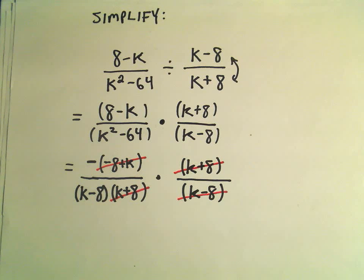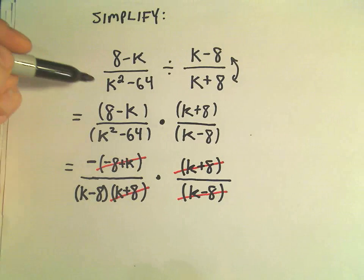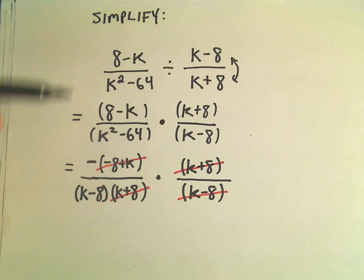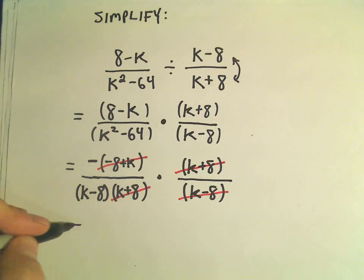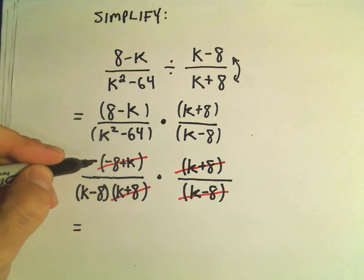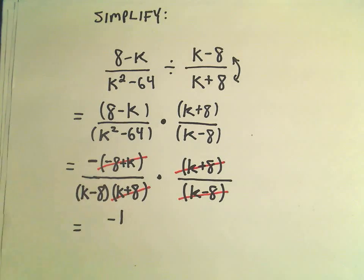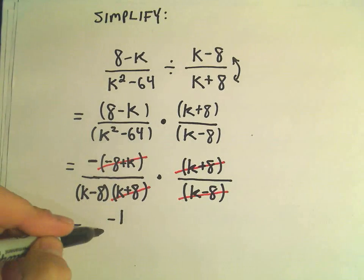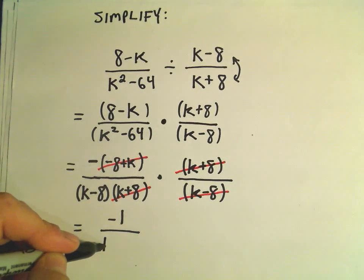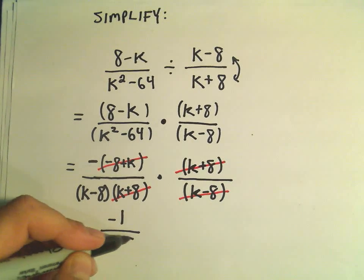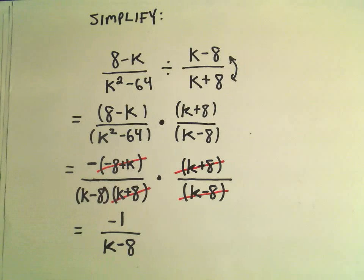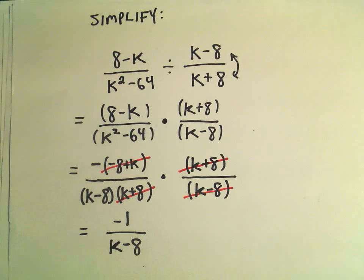We've now simplified down our original problem. In the numerator we have a negative — you can think of that as just being negative 1 — divided by k minus 8. You can put this in parentheses or not; algebraically it's not going to change its value. Typically I would just write it like this.